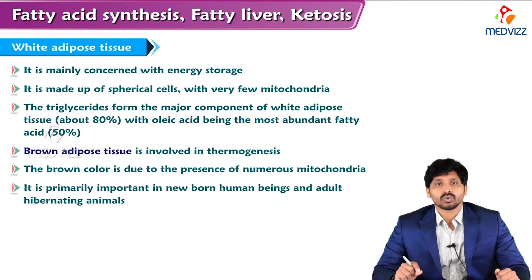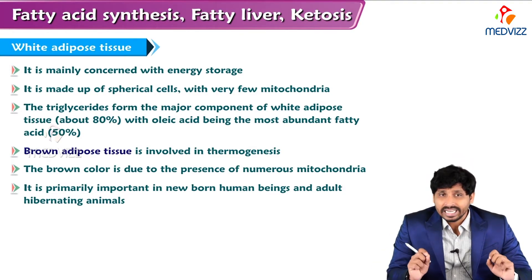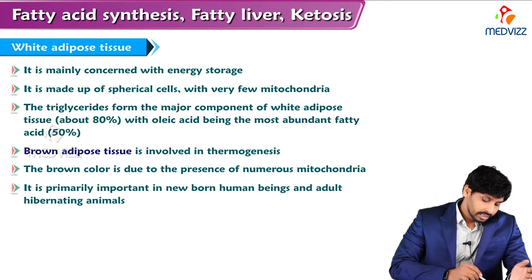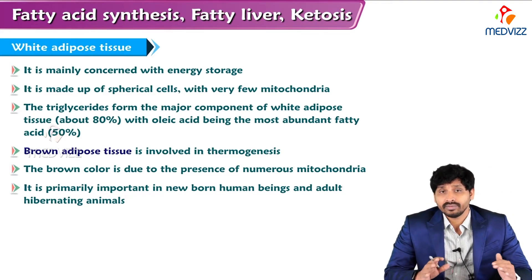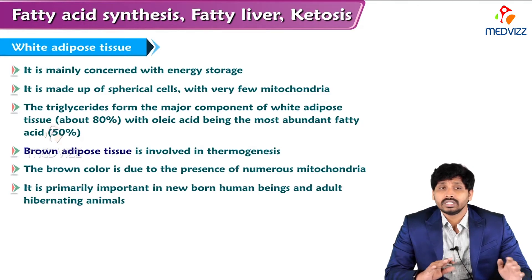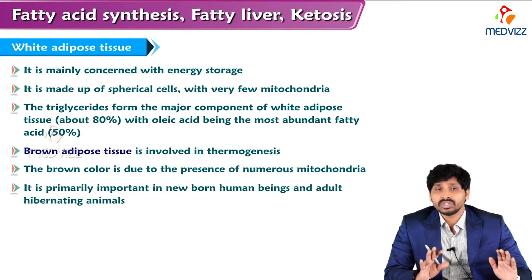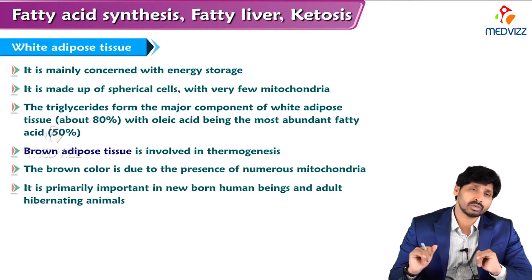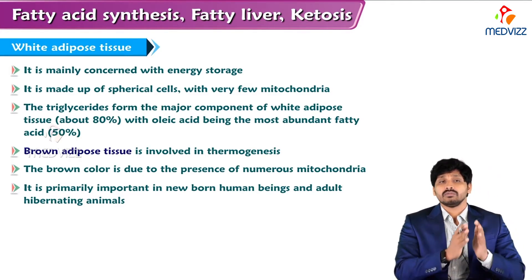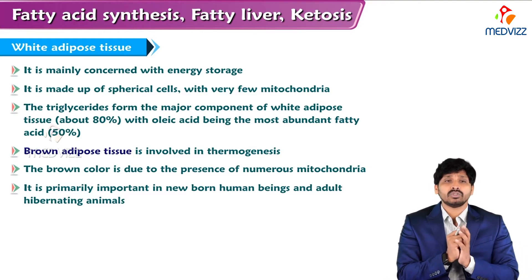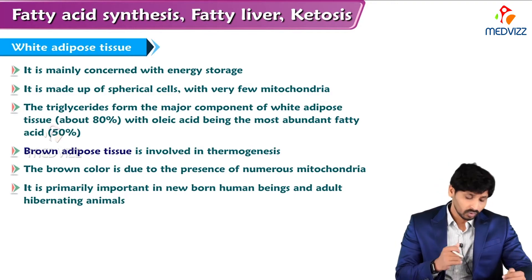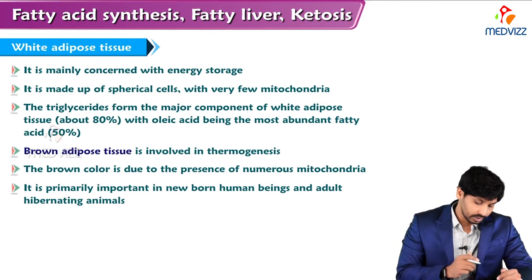White adipose tissue is mainly concerned with energy storage, and is made up of spherical cells with very few mitochondria. There is also brown adipose tissue, which is seen more in newborns and children compared to adults. White adipose tissue has limited mitochondria, while brown adipose tissue has more mitochondria - that is one of the significant differences between the two.